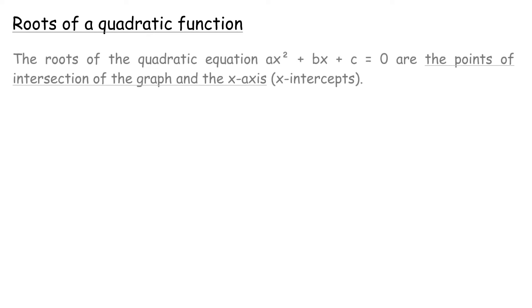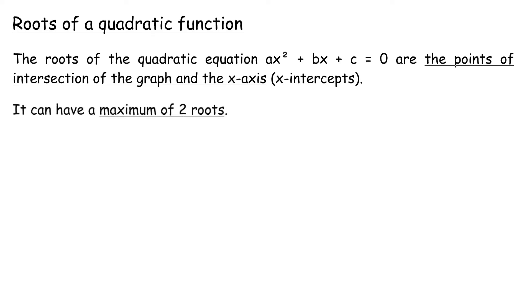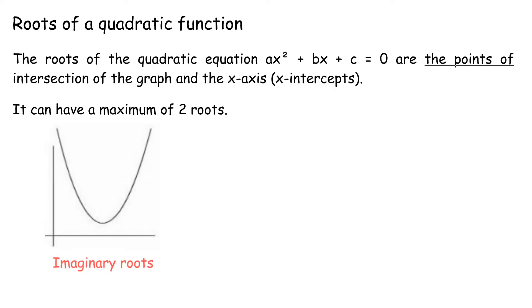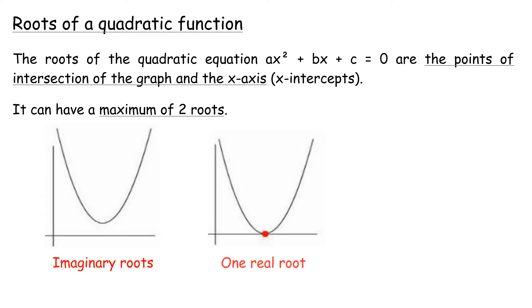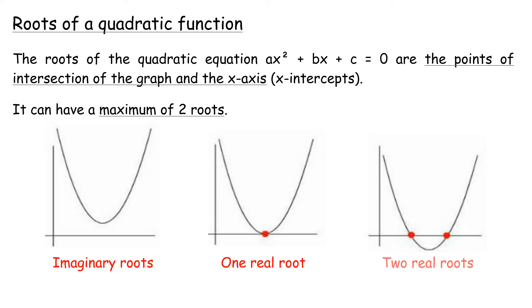Roots of a Quadratic Function: the roots of the quadratic equation ax² plus bx plus c equals 0 are the points of intersection of the graph and the x-axis, i.e. the x-intercepts. It can have a maximum of two roots. If the graph never touches the x-axis, these are called imaginary roots. If the graph touches one point on the x-axis, it is called one real root. If the graph touches two points on the x-axis, it is called two real roots.